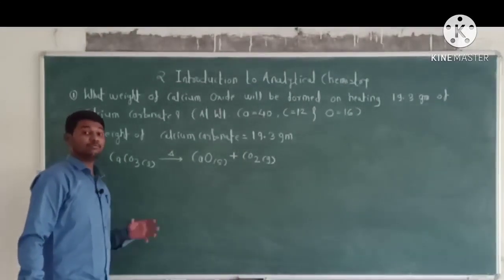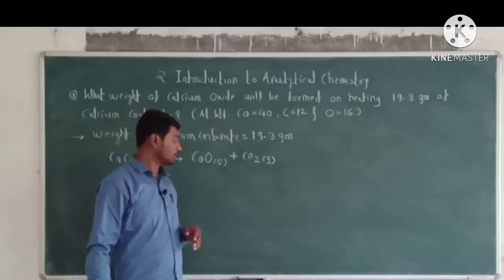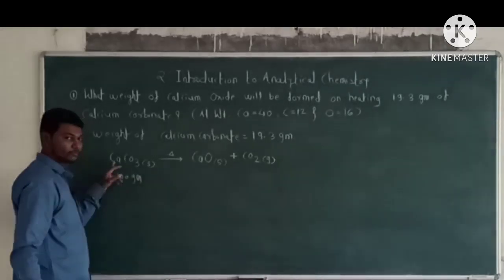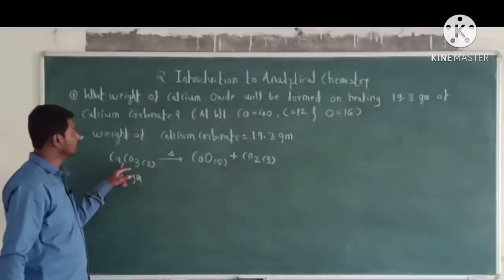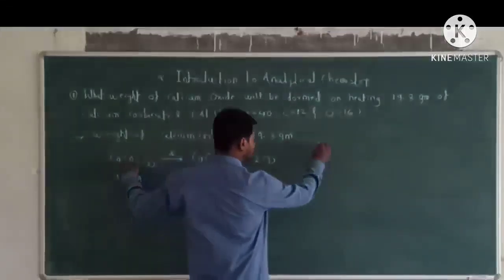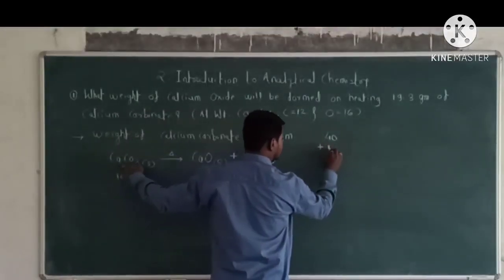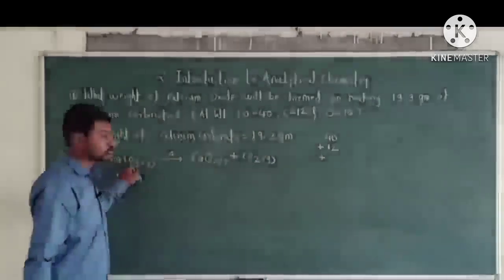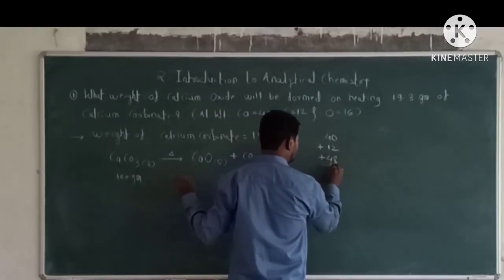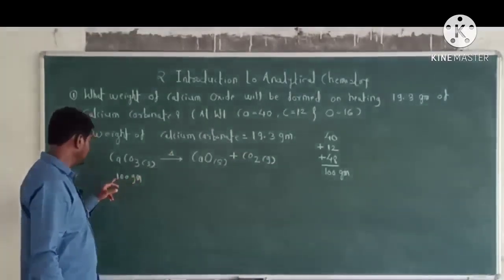Step 2: Write down the masses of reactants and products below their formulae. The mass of calcium carbonate is 100 grams, calculated as: atomic weight of calcium (40) plus carbon (12) plus oxygen×3 (48) equals 100 grams.